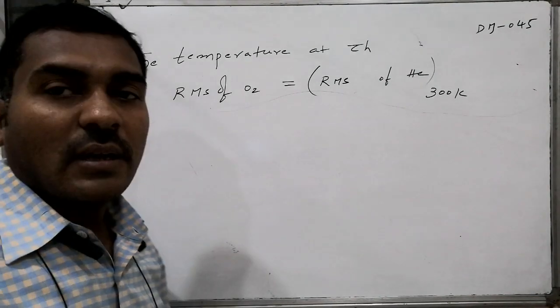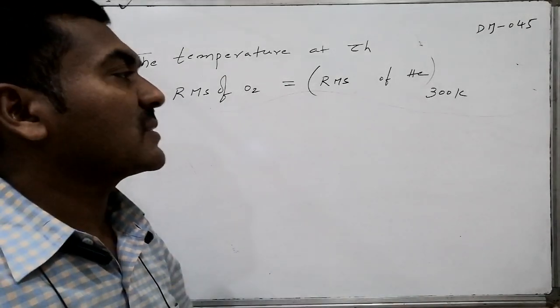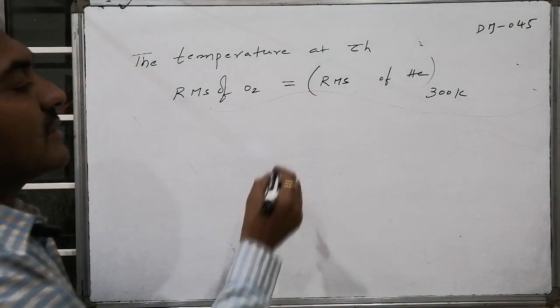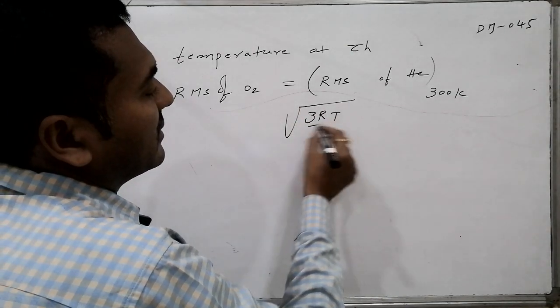The temperature at which RMS speed of oxygen is equal to that of RMS speed of helium. The RMS speed is given by square root of 3RT by M.